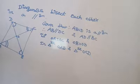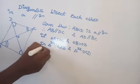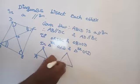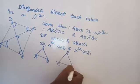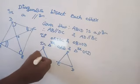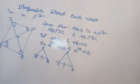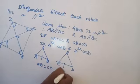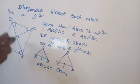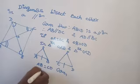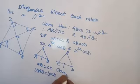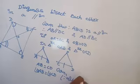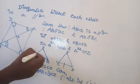In triangle OAB and triangle OCD, we are going to prove these two triangles are congruent. AB equal to DC — because in a parallelogram, two pairs of opposite sides are parallel and equal. Therefore AB equal to DC is given.